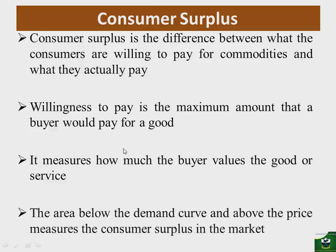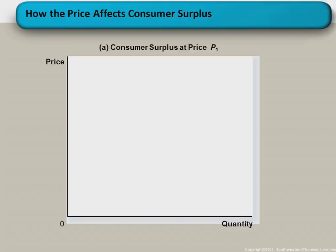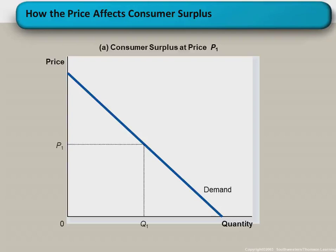The area below the demand curve and above the equilibrium price is used to measure consumer surplus. In a graphical illustration, with price on the vertical axis and quantity on the horizontal axis, and a downward-sloping demand curve, we define our price at P1 and quantity at Q1. You will notice the demand curve meets a point — let's call it point A.